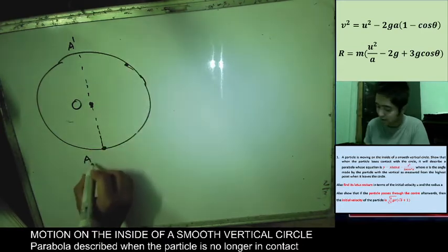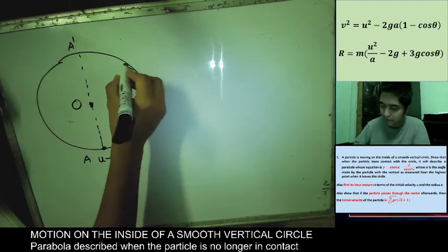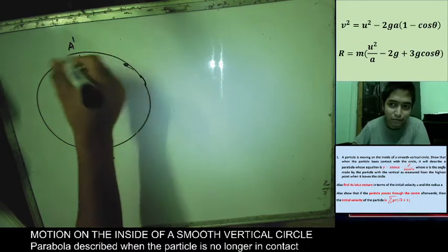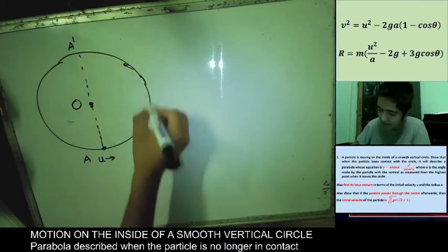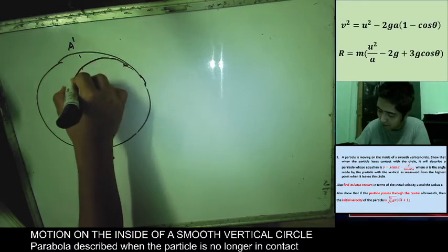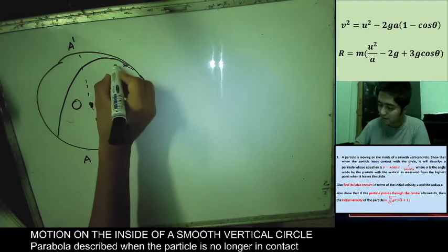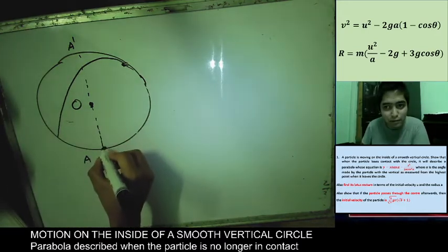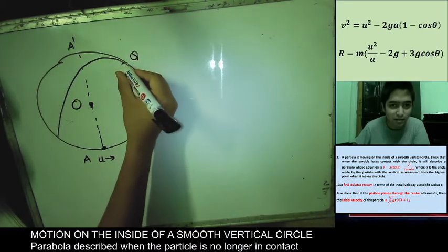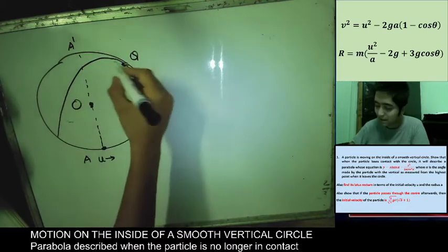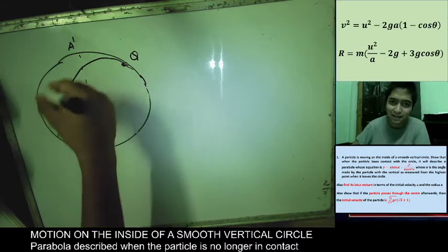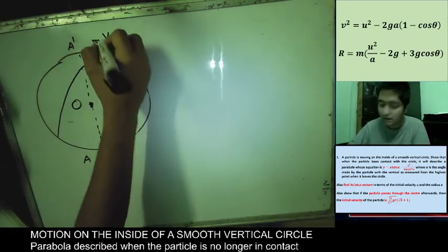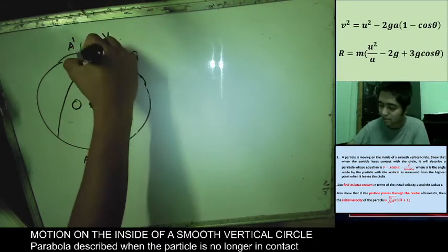The particle starts from A, the lowest point, with initial velocity U. After it reaches point Q and loses contact, it is no longer constrained to the circle — so the particle is falling freely from that point. Because there is some initial velocity, the particle will follow a curved path like this. From A to Q it moves along the circle; after Q it behaves as a projectile.